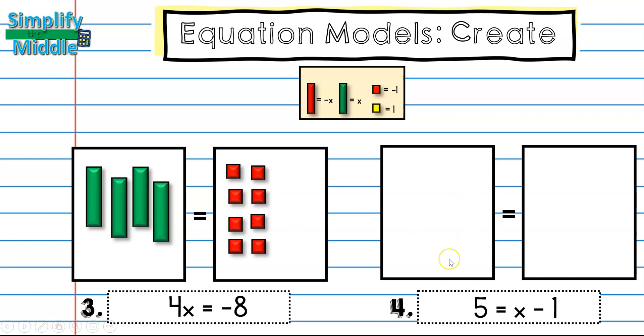On this problem, I have 5. And because it's not negative, I'm going to be using this yellow tile. So I'm going to go ahead and put 5 of these here. On this side of the scale, I have x. So I'm going to put my green tile. And then I have minus 1. Remember, in the last section, we said that anytime that you have these tiles, they can represent minus 1 or negative 1. So I'm going to go ahead and put my 1 negative tile here, which gives me 5 equals x minus 1.